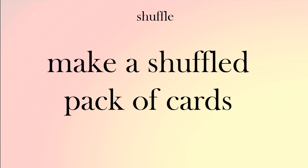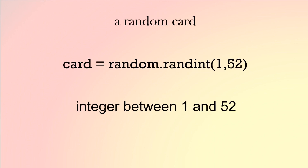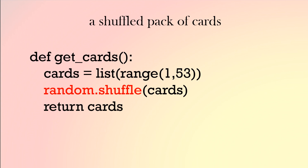So let's make a shuffled pack of cards. We can choose a random card by using random.randint, as we saw in the last video. But to play a normal game we want a pack of 52 cards and then shuffle them, so we can use random.shuffle. Here's the code: we make a list from one to 52 and then shuffle them, giving us 52 numbers in a random order.